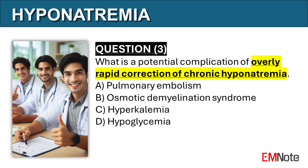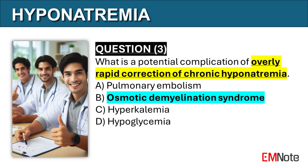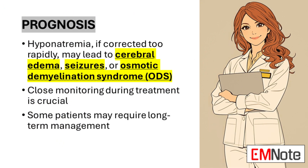Question 3: What is a potential complication of overly rapid correction of chronic hyponatremia? The correct answer is B. A potential complication is osmotic demyelination syndrome, previously called central pontine demyelinosis. Hyponatremia, if corrected too rapidly, may lead to morbidity and mortality due to cerebral edema, seizures, and osmotic demyelination syndrome. Close monitoring of serum sodium levels during treatment is paramount, allowing for timely adjustments in therapy. The rate of sodium correction is as crucial as the correction itself, with overly rapid correction potentially leading to worse outcomes than the hyponatremia itself.